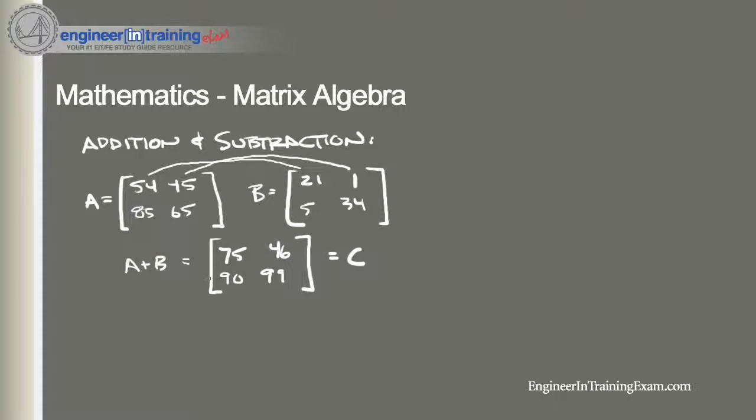Now what about subtraction, A minus B? Well, again, we're going to get a matrix. A and B have to have the same order, and all we need to do is subtract each corresponding element. So it's 54 minus 21, which gives us 33, 45 minus 1 is 44, 85 minus 5 is 80, and 65 minus 34 is 31. So that's C or D or whatever letter you want.